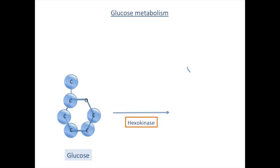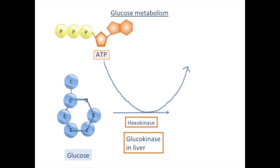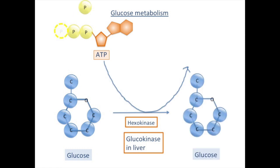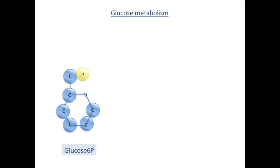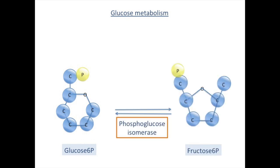Glucose easily gets out of the cell, so it puts a phosphate group on first. ATP gives a phosphate group to glucose and it's converted to ADP. Now it prepares to divide. Glucose-6-phosphate is converted to fructose-6-phosphate to prepare to divide into two pieces. There's no phosphorylation reaction in that step.